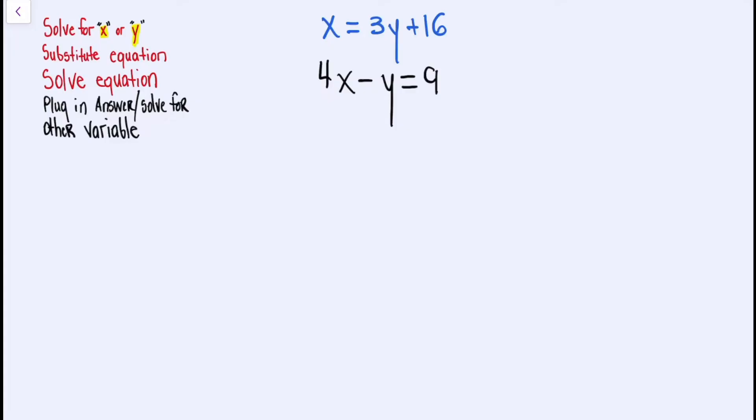In our first problem, we should see that our first equation, they solved for X. And when they say solve for X and Y, we just want to get it by itself. X is equal to the rest of the equation or Y is equal to the rest of the equation.